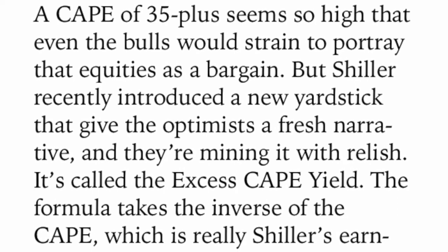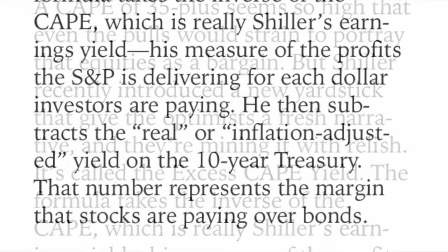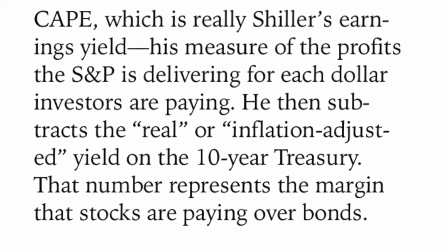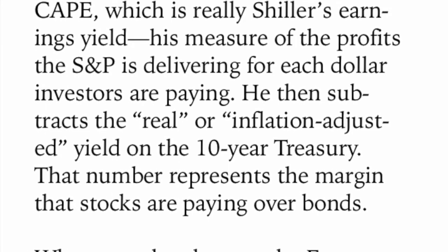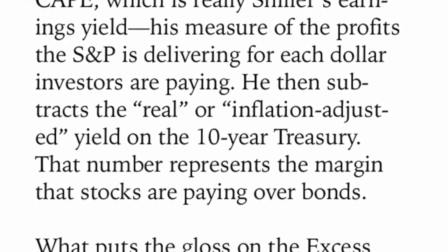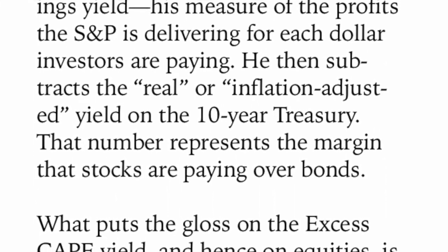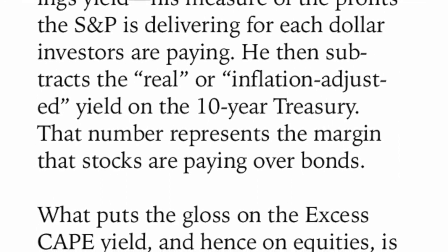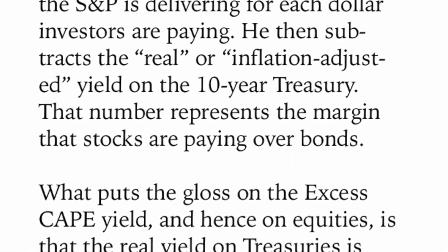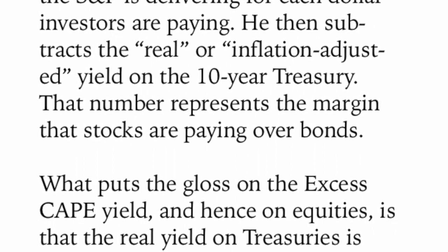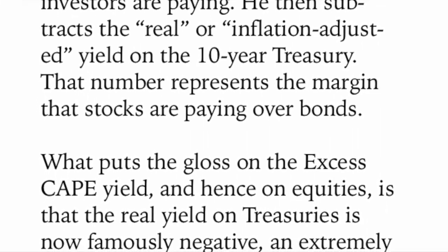The formula takes the inverse of the CAPE — which is Shiller's earnings yield, his measure of the profits the S&P delivers for each dollar investors are paying — and then subtracts the real or inflation-adjusted yield on the 10-year Treasury. That number represents the margin that stocks are paying over bonds. Now we're going to be able to compare stocks with bonds using this Excess CAPE Yield.